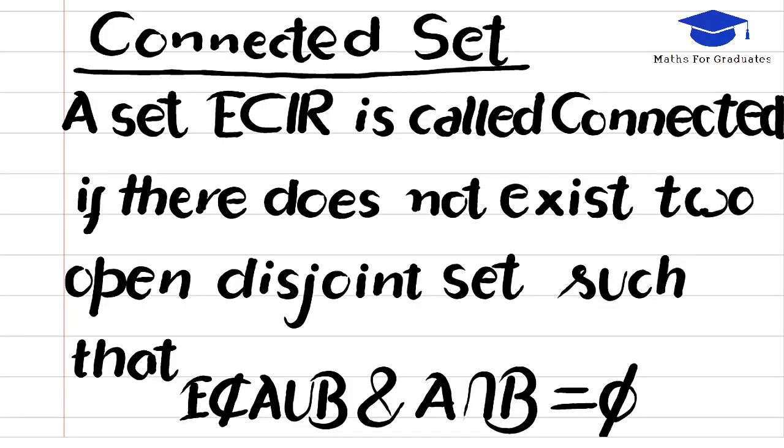A set is connected if it cannot be represented as the union of two open sets. Or simply speaking, a set is connected if it is not disconnected.